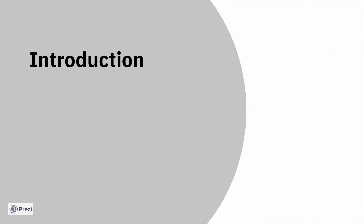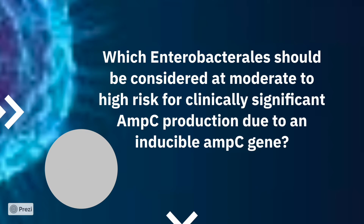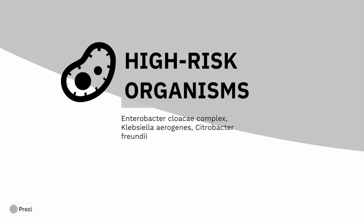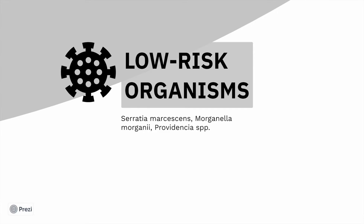The next part is which Enterobacteriaceae should be considered at moderate to high risk for clinically significant AMP-C production due to the inducible AMP-C gene. If your patient has an infection with Enterobacter cloacae complex, Klebsiella aerogenes, or Citrobacter freundii, then you have a high risk for developing AMP-C resistance. Resistance develops in these organisms when exposed to ceftriaxone or similar antibiotics. The low risk organisms are Serratia, Morganella, and Providencia.